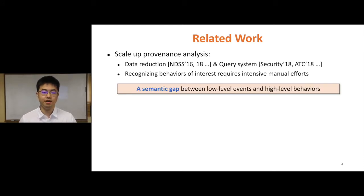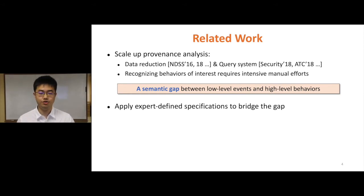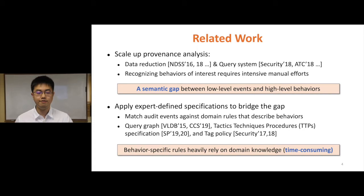A significant problem faced by the analyst is the semantic gap between low-level events and high-level behaviors. Another line of research tries to bridge this gap by applying expert-defined specifications — they match audit events against domain rules that describe behaviors. Examples of such rules include query graphs, TTP specifications, and tag policies. However, behavior-specific rules heavily rely on domain knowledge, and they are time-consuming and error-prone to develop.